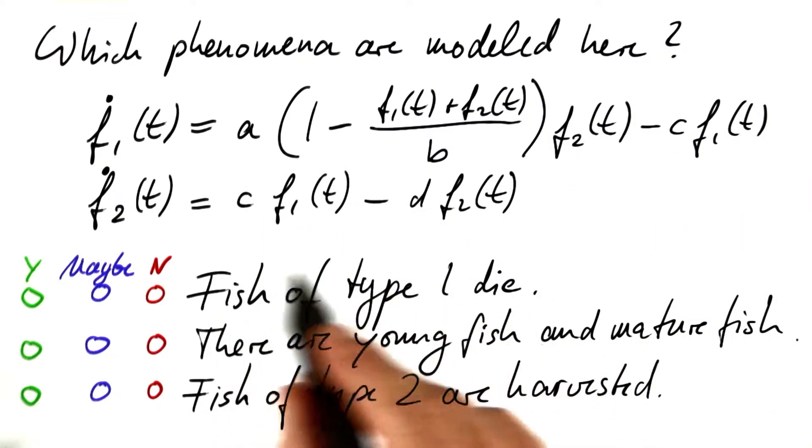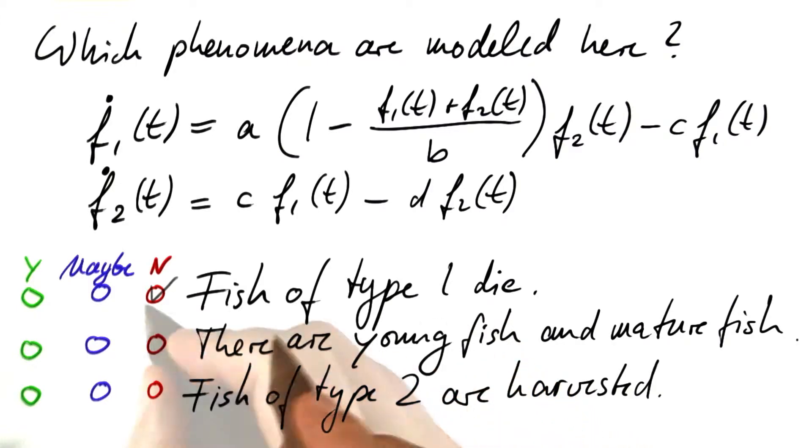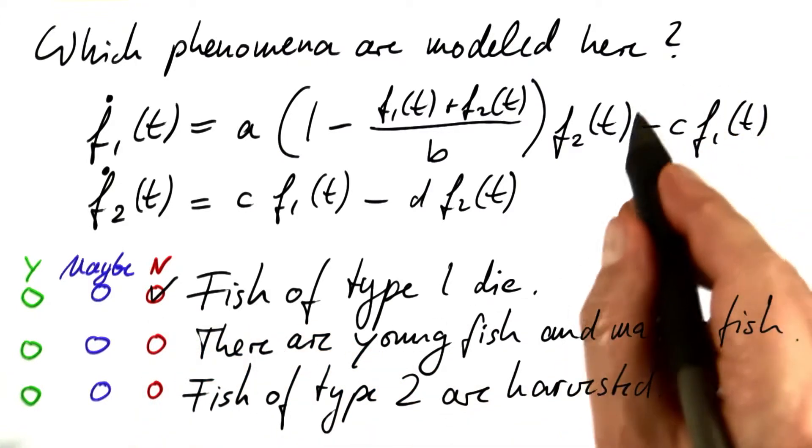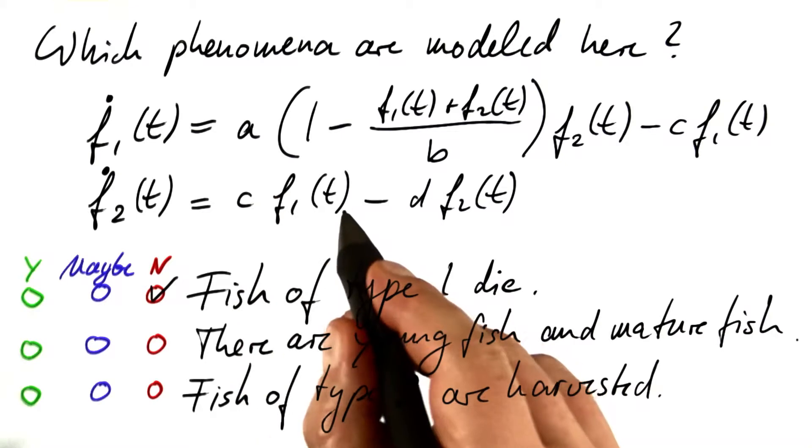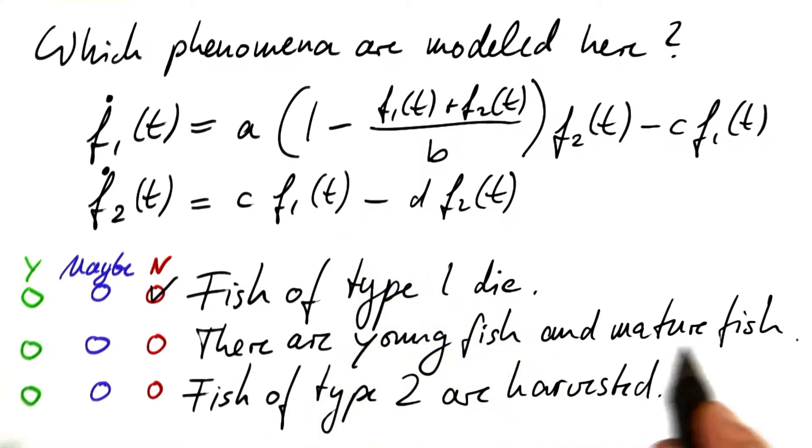So no, fish of type 1 don't die. It's rather that we have two types of fish and the first type becomes the second type after a while. Young fish and mature fish.